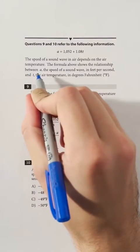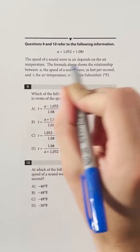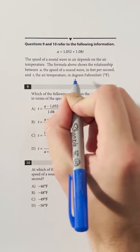shows the relationship between A, the speed of a sound wave in feet per second, and T, the air temperature in degrees Fahrenheit.